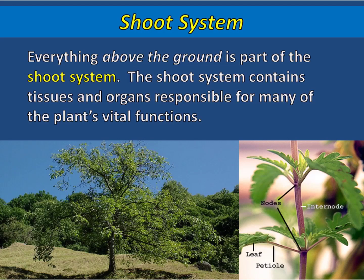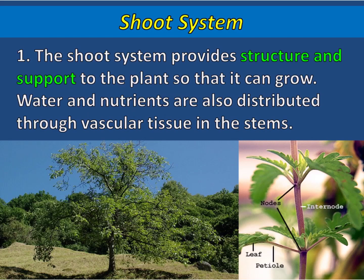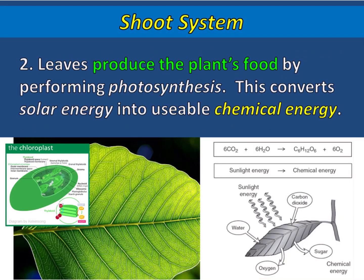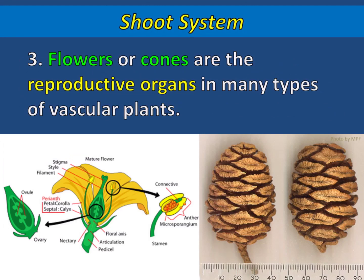Everything above the ground is part of the shoot system of the plant. The shoot system contains tissues and organs responsible for many of the plant's vital functions, providing structure and support so that it can grow. Water and nutrients are also distributed through vascular tissue in the stems. Leaves produce the plant's food by performing photosynthesis, converting solar energy into usable chemical energy in the form of sugars. The reproductive organs of the plant are also a part of the shoot system — flowers or cones are the reproductive organs in many types of vascular plants.